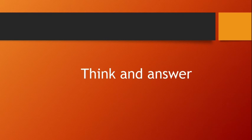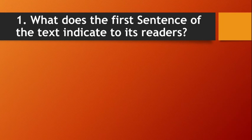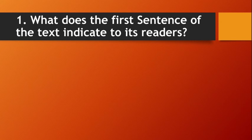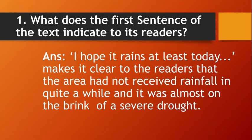Think and answer, question number one: What does the first sentence of the text indicate to its readers? The first sentence is 'I hope it rains at least today.' This sentence indicates that the area had not received rainfall in quite a while and was almost on the brink of a severe drought.